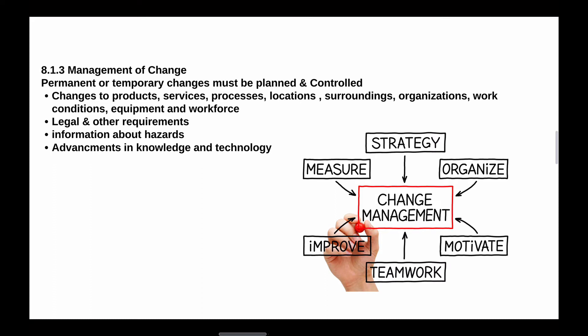Also consider changes in information about hazards or advancements in knowledge and technology. In summary, all changes need to take place in a controlled manner — assess what the changes are, identify the hazards, put a strategy in place, and make sure that you use your system already developed in the previous clauses to deploy that change strategy throughout the business.